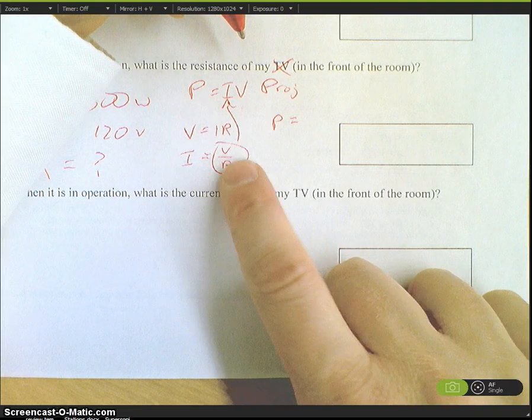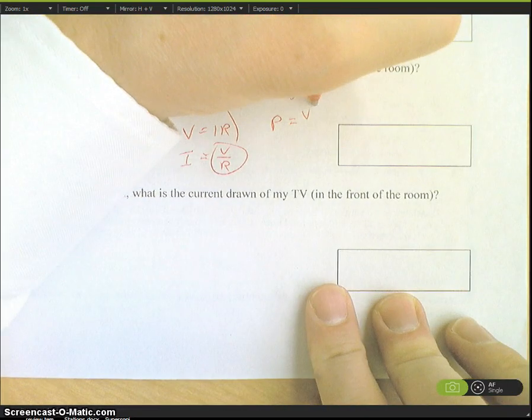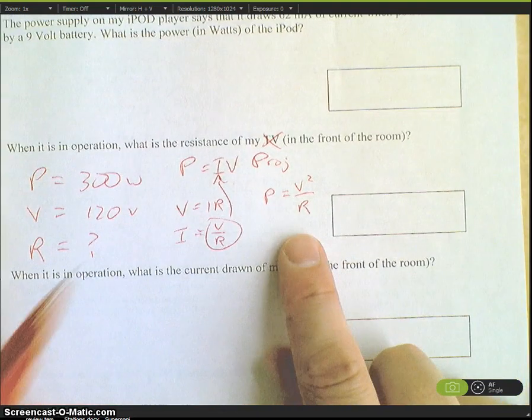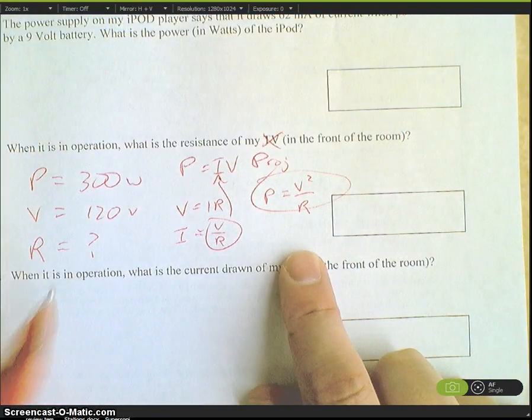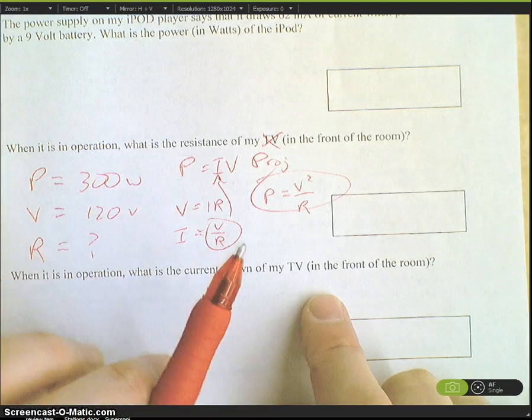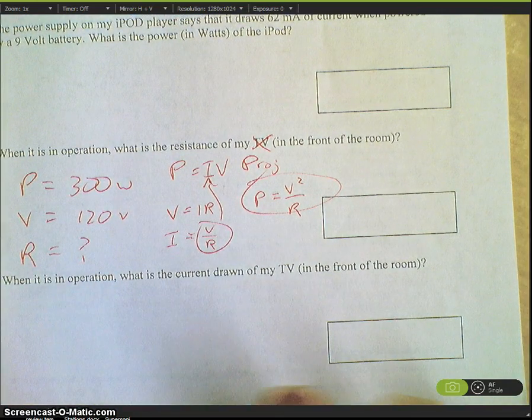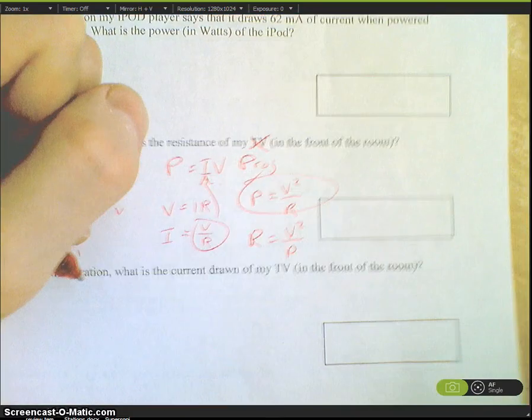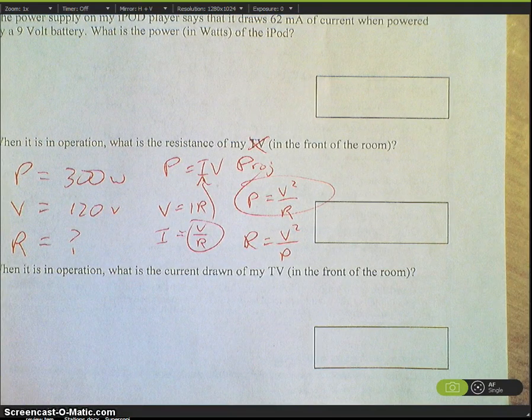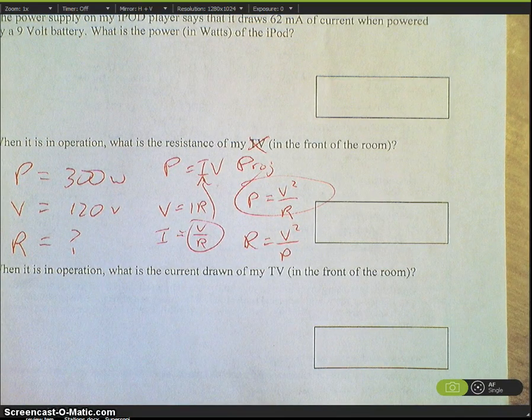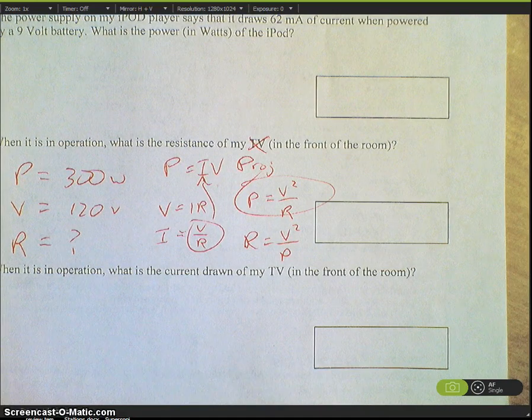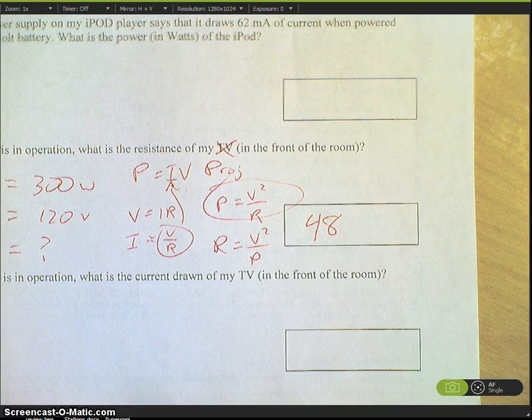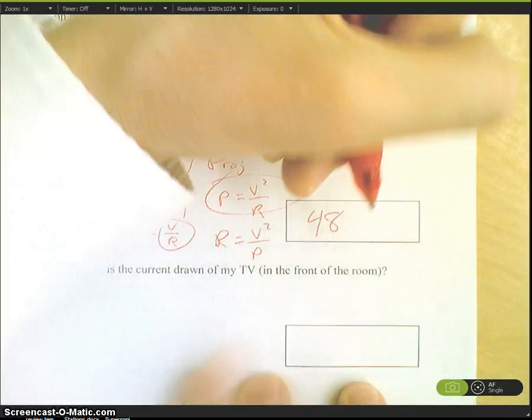I can substitute this into that equation. So power is equal to, instead of I times V, it's V divided by R times V, which is V squared over R. Now I have the equation with the variables that I want. All I have to do is solve it for R. If I multiply both sides by R, divide both sides by P, R is equal to V squared over P. If I plug the numbers in, 120 squared divided by 300 gives us 48. What are the units? Ohms.